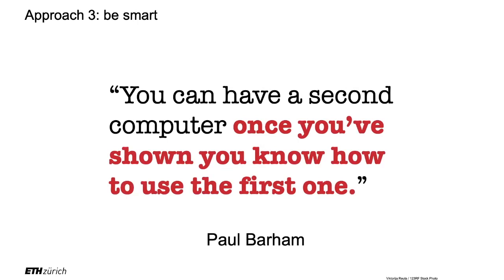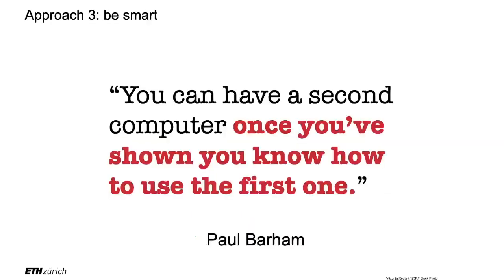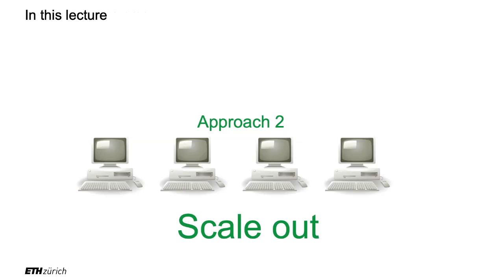I like this quote: you can have a second computer — a data center — once you've shown you know how to use the first one. When we built RumbleDB, which we'll be using in this lecture, it works on the cloud — we made it work with dozens of machines on Amazon and Azure. But when we developed it to make it faster, we did it on a laptop. You're basically squeezing more out of the same hardware, and then when you take it to the cloud, it's also going to be faster.